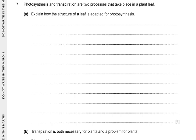Question 7 is usually a sort of essay question, though it is now more direct. Photosynthesis and transpiration are two processes that take place in a plant leaf. Explain how the structure of a leaf is adapted for photosynthesis. Key adaptations include: large surface area for maximum light absorption, stomata for gaseous exchange, thin leaf for short diffusion distance.